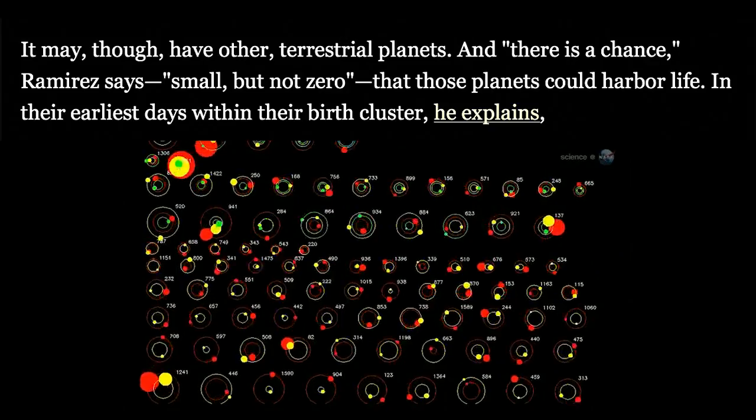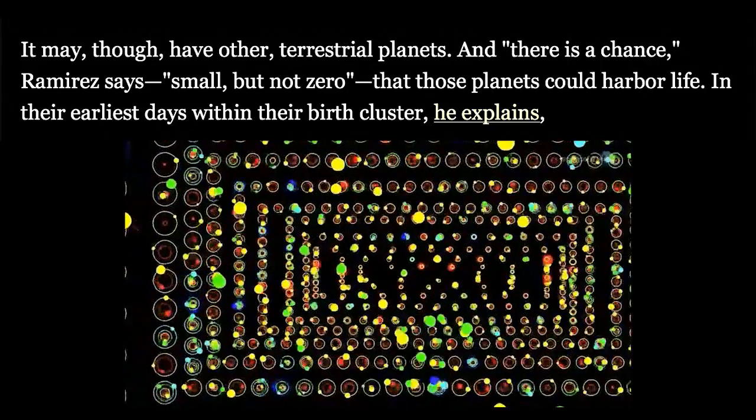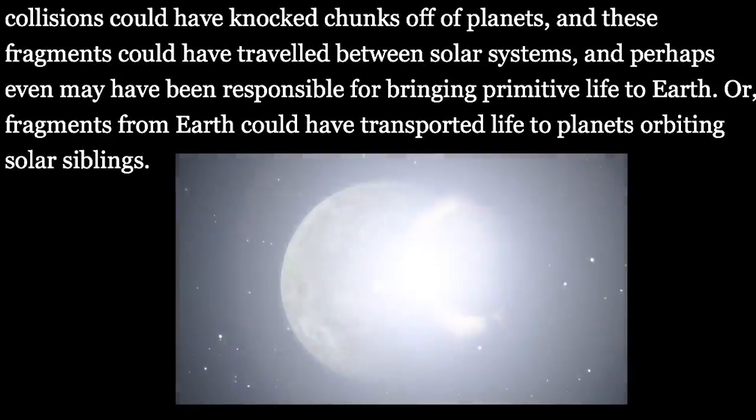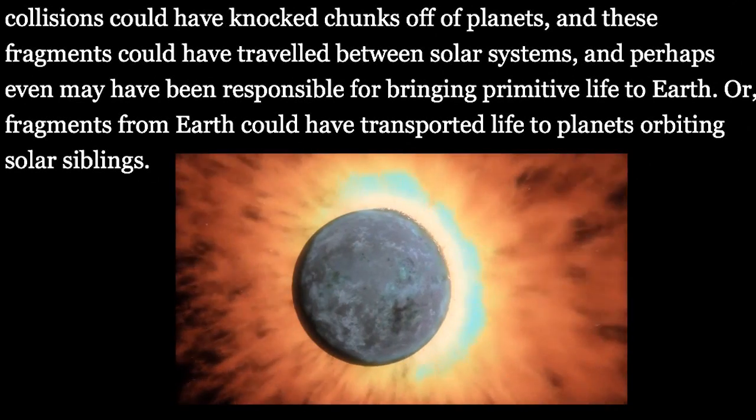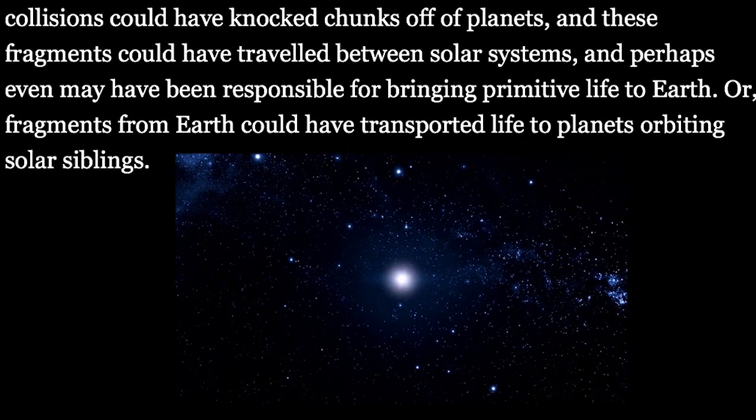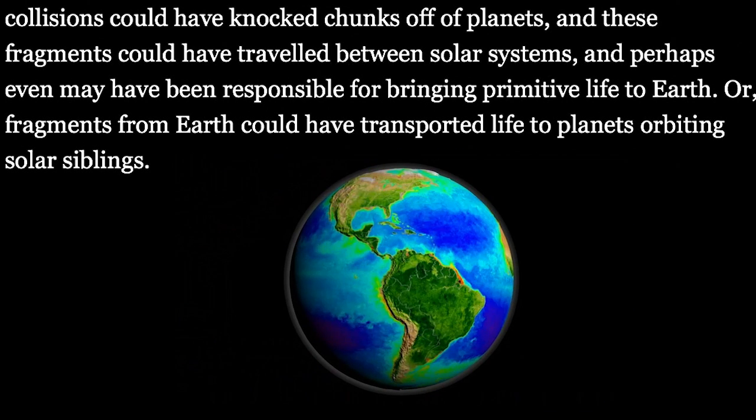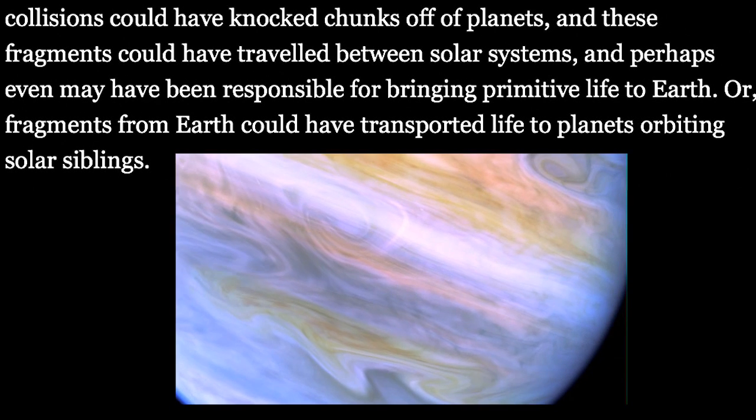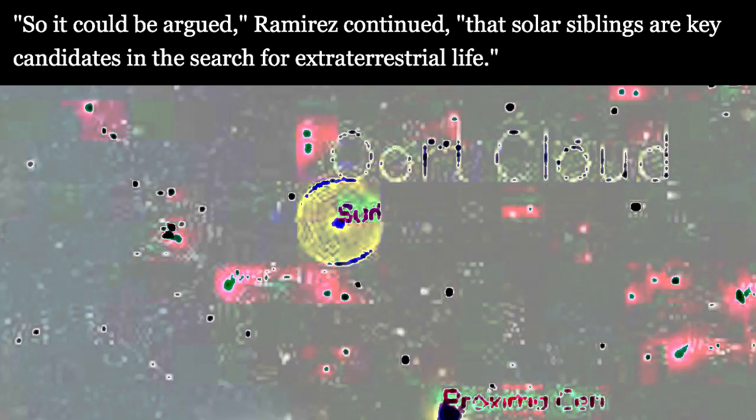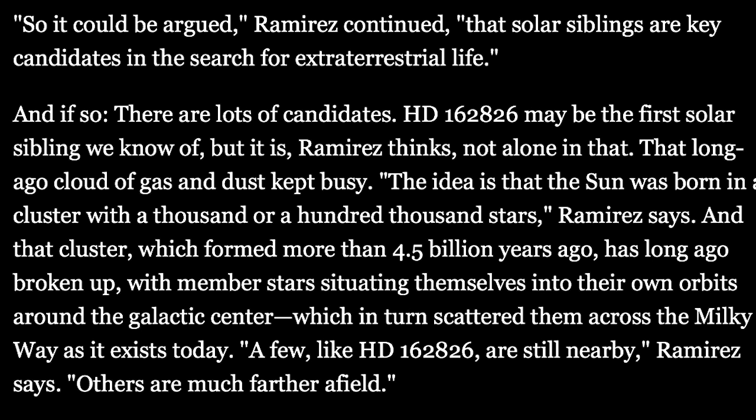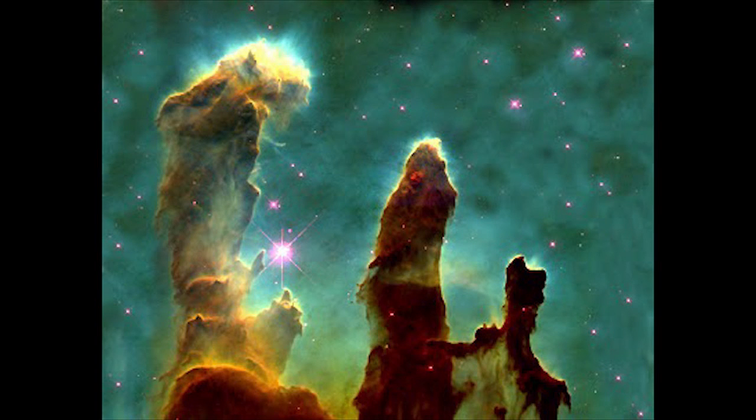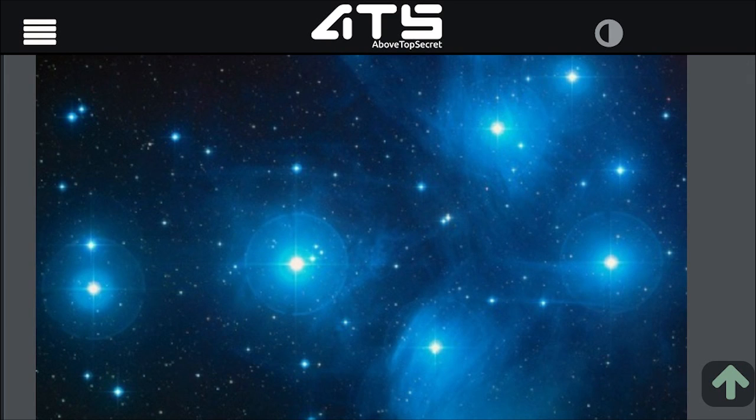It may, though, have other terrestrial planets. And there is a chance, Ramirez says—small, but not zero—that those planets could harbor life. In their earliest days within their birth cluster, he explains, collisions could have knocked chunks off of planets, and these fragments could have traveled between solar systems and perhaps even may have been responsible for bringing primitive life to Earth. Or fragments from Earth could have transported life to planets orbiting solar siblings, Ramirez says. So it could be argued that solar siblings are key candidates in the search for extraterrestrial life.